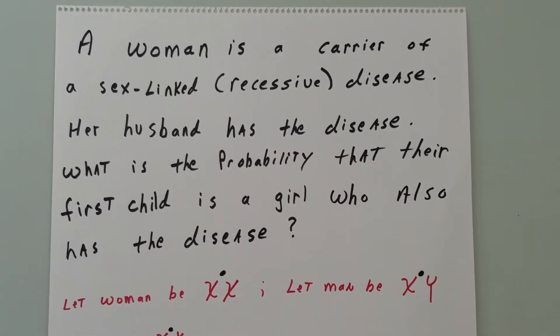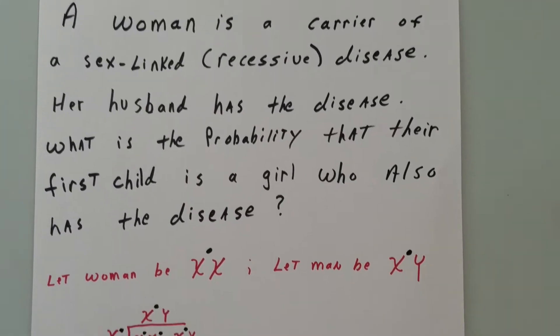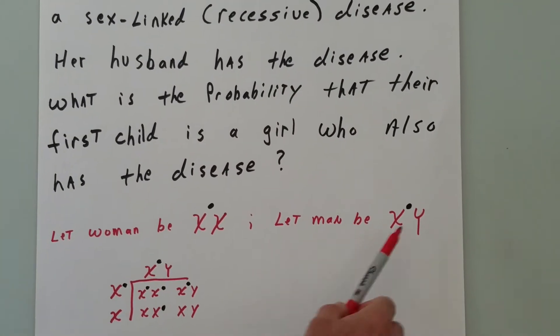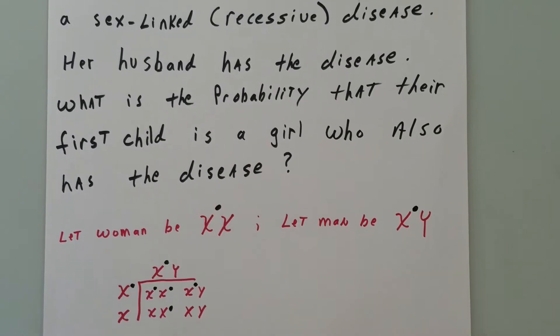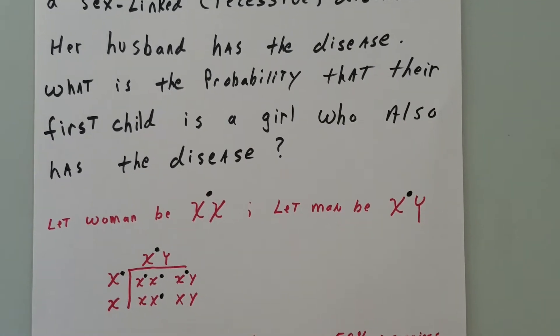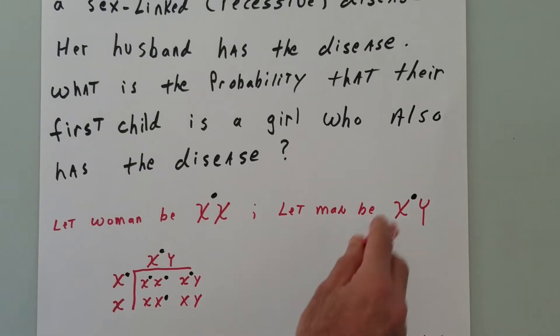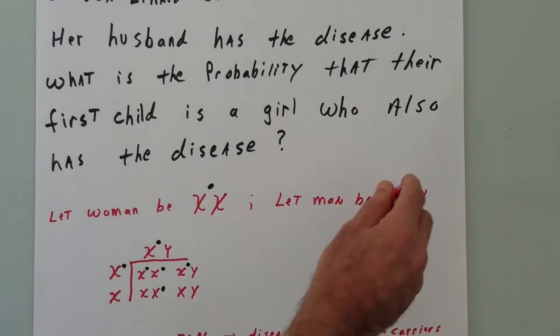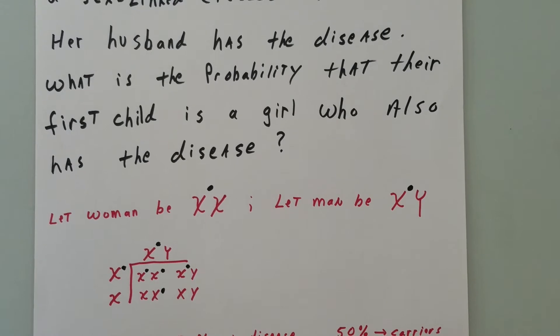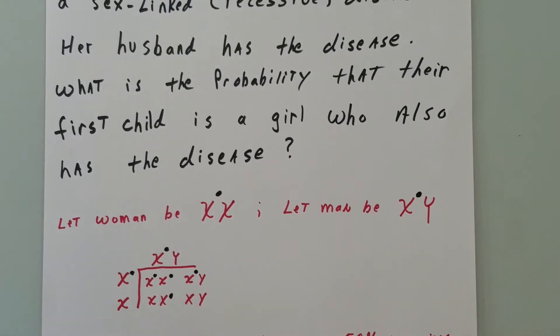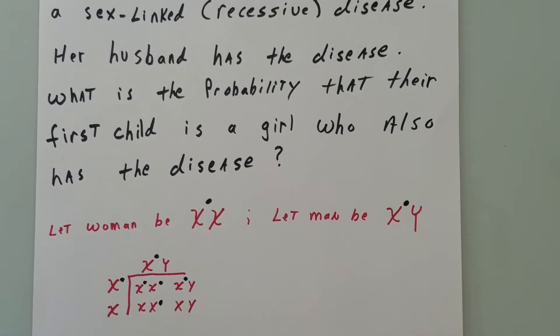The first thing we're going to do is denote the woman as XX and the man as XY. I'm going to put a little mark on one X for the woman because she's a carrier, so she only has one copy of the bad gene. And the man obviously has a single copy because he only has one X chromosome, and we call him hemizygous.